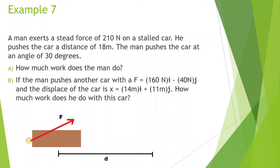A man exerts a steady force of 210 newtons on a stalled car and pushes the car a distance of 18 meters. How much work does the man do? The man pushes the car at an angle of 30 degrees, so he's not exactly pushing in the same direction as the car's motion, meaning he's not being the most efficient.